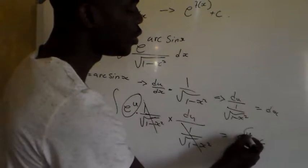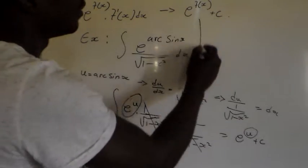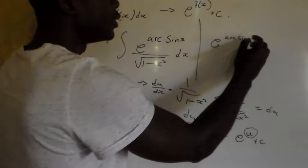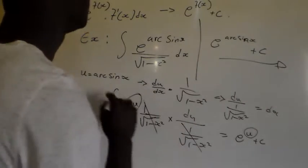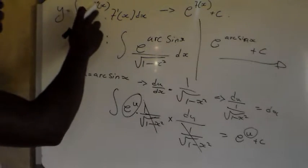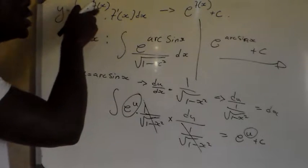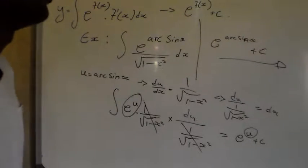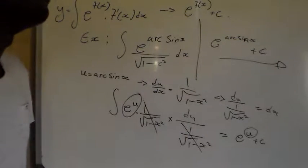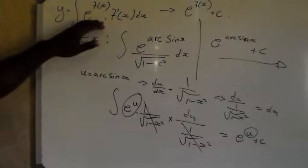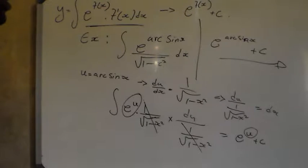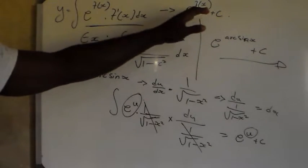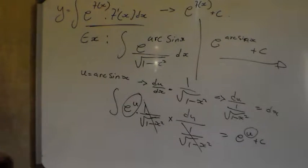Then we substitute back our u. So therefore the integral is e to the power u plus C, and substituting back, that is e to the power arcsin x plus C. So the integral of e to the power f of x multiplied by the derivative of f of x is equal to e to the power f of x plus C. It's not in your formula sheet, so you must know it.